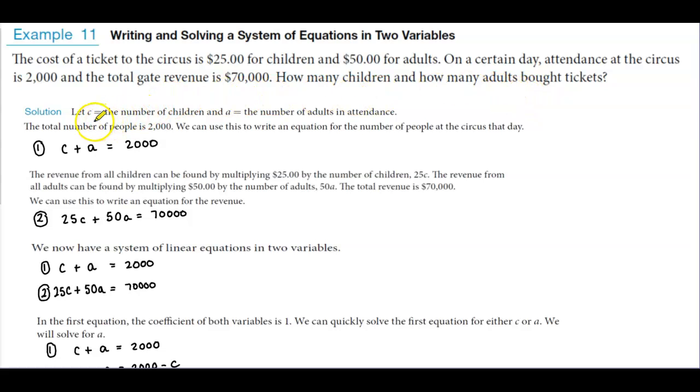The first thing we're going to do is let C represent the number of children and let A equal the number of adults in attendance. The total number of people in attendance is 2,000.